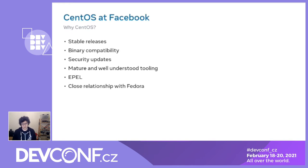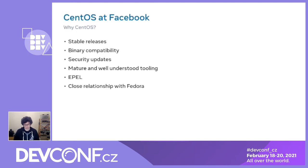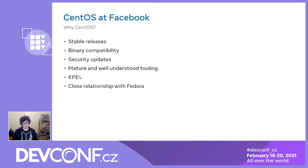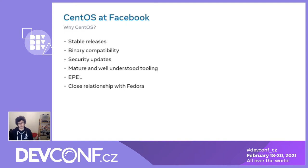CentOS gives us good, well-understood tooling. Things like the packaging stack are very mature — tools that people know how to work with and contribute to. Finally, CentOS is part of a larger ecosystem. CentOS itself is a fairly conservative distribution and doesn't carry that many packages, but because it's part of the Fedora ecosystem, we also have access to everything packaged in EPEL and Fedora. If something is missing, we can work with those communities to make it available.